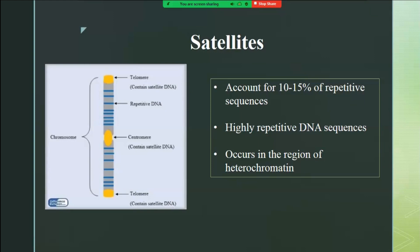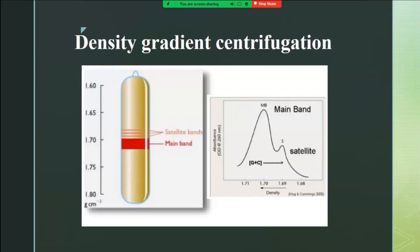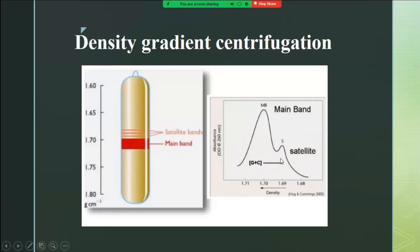Satellites account for 10 to 15 percent of repetitive sequences. They are highly repetitive and generally occur in the region of heterochromatin — near the centromere and near the telomeric regions. The name 'satellite' came about because when scientists tried to separate all DNA forms by density gradient centrifugation, this region of the chromosome appeared as a small band compared to the main DNA, so they called it satellite.